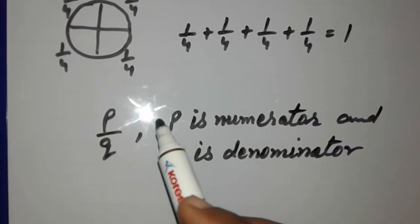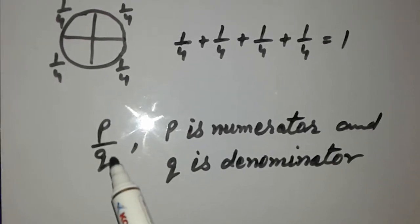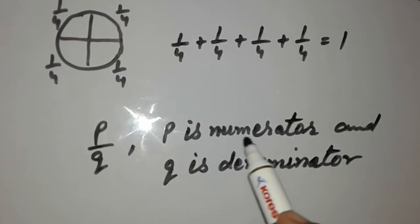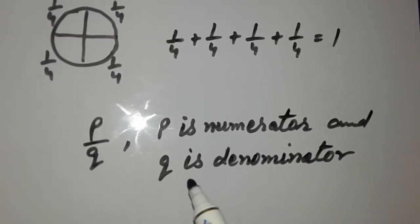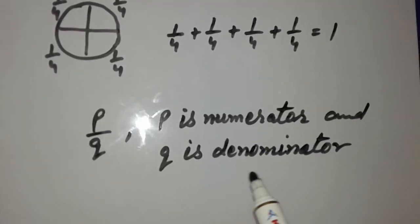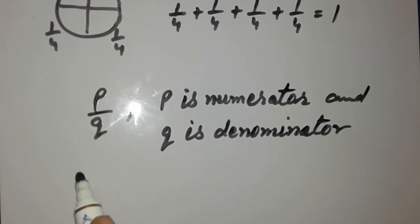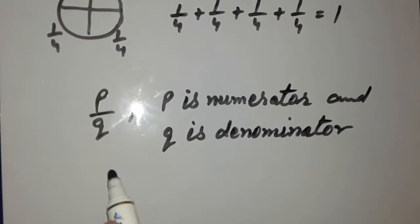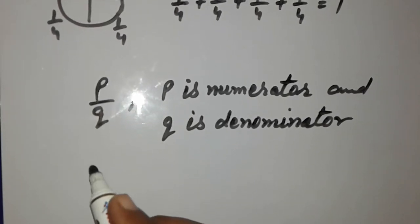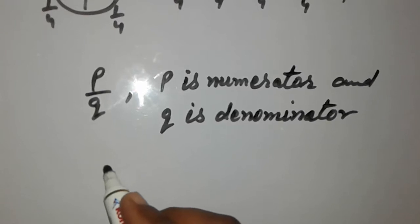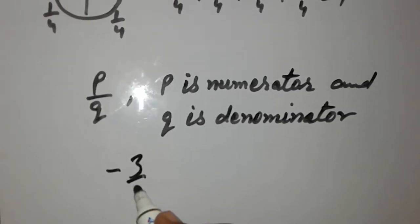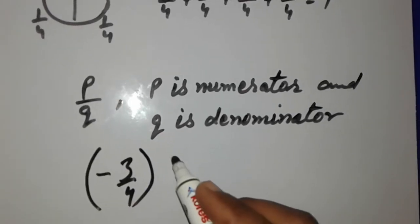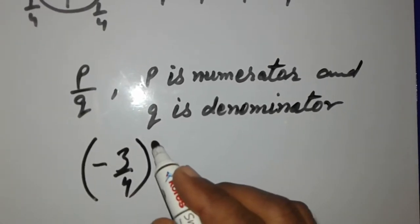A fraction is of the form P by Q. The upper part, that is P, is called the numerator and Q is the denominator. An important thing to note is that a fraction will never be written in a negative form. For example, minus three upon four is not a fraction because it is negative.